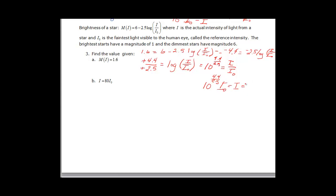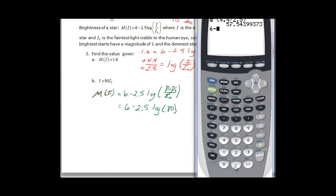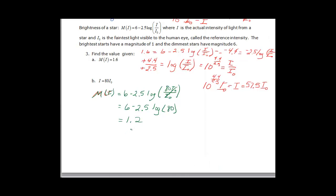If we take that to our calculator, we find out that it's 57.5 times the reference intensity. So what happens when i is equal to 80 i0? Well, we can substitute for i here. So we have m of i is going to be equal to 6 minus 2.5 times the log of i. But now we know that i is 80 i0 over i0, and those are going to cancel. So now we have 6 minus 2.5 times the log of 80. We have 6 minus 2.5 and then log of 80, exactly like we see it on paper. And we find out that is 1.24 or 1.2. That would be the magnitude.